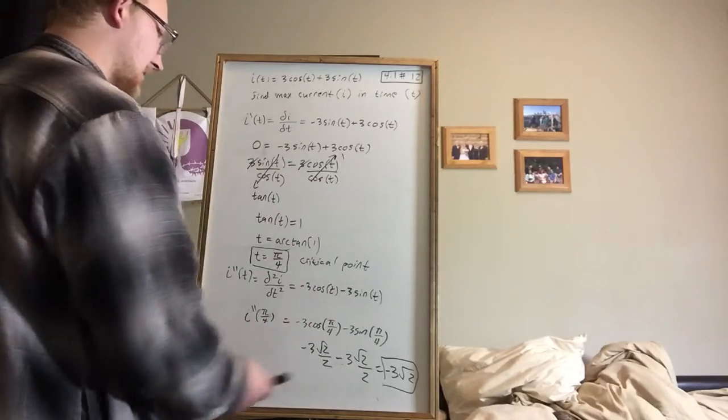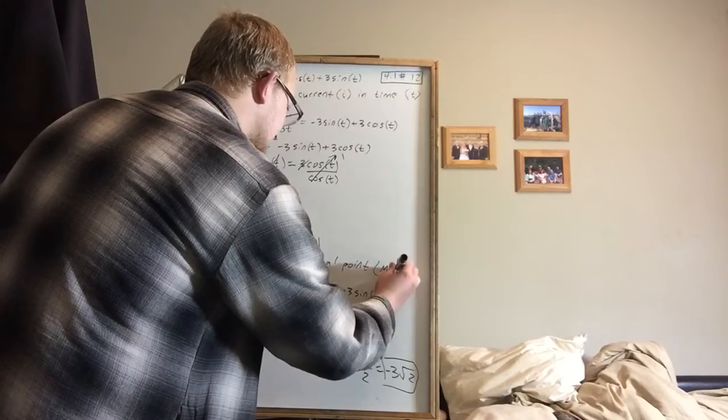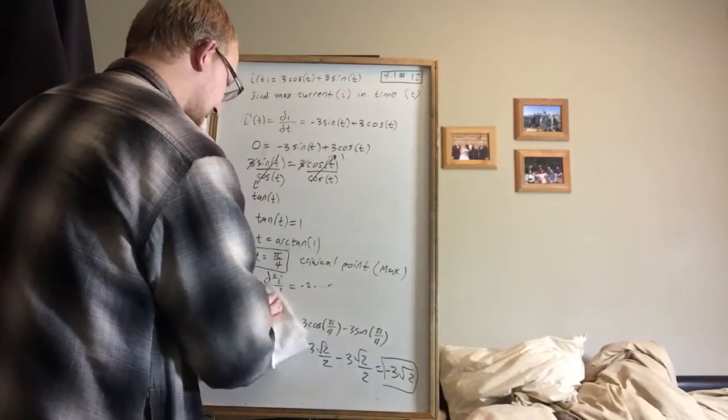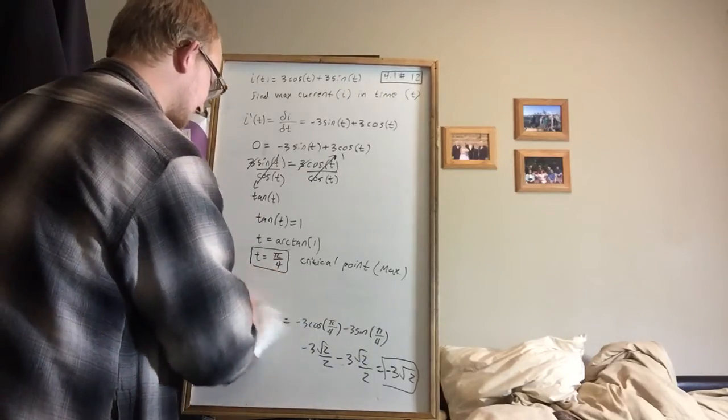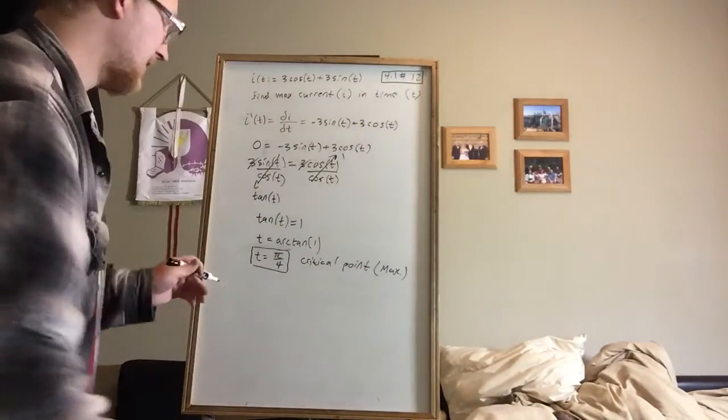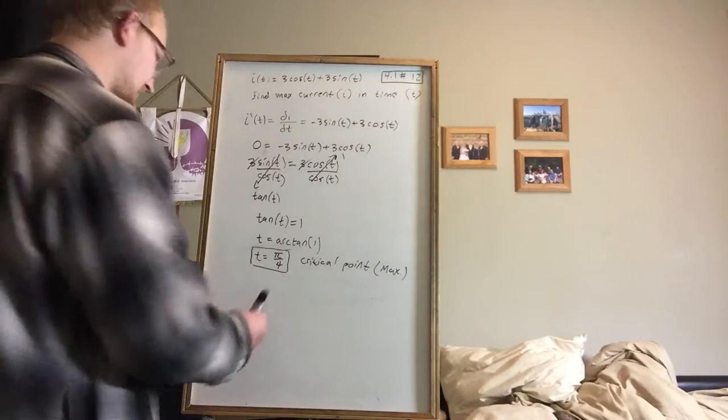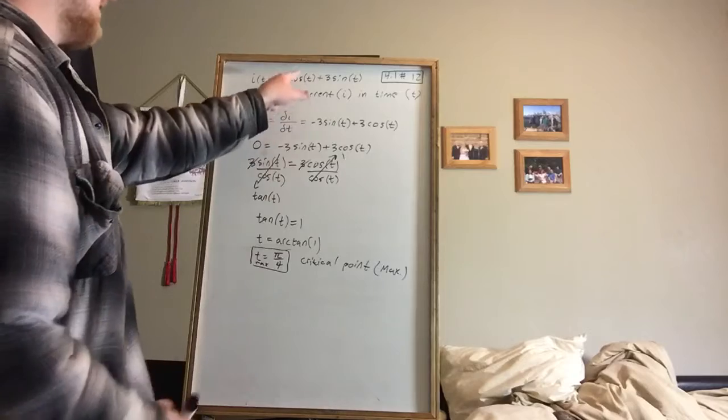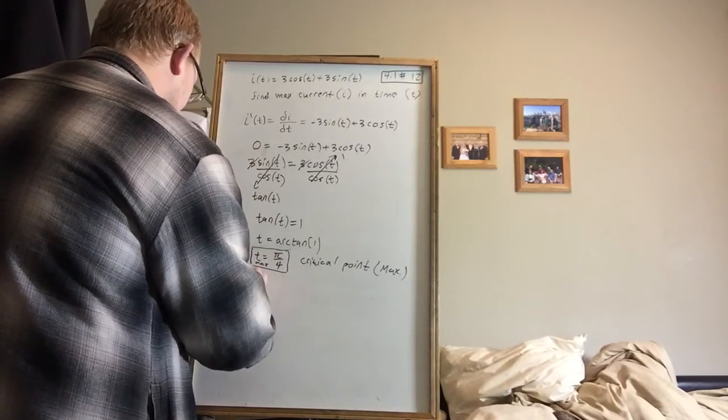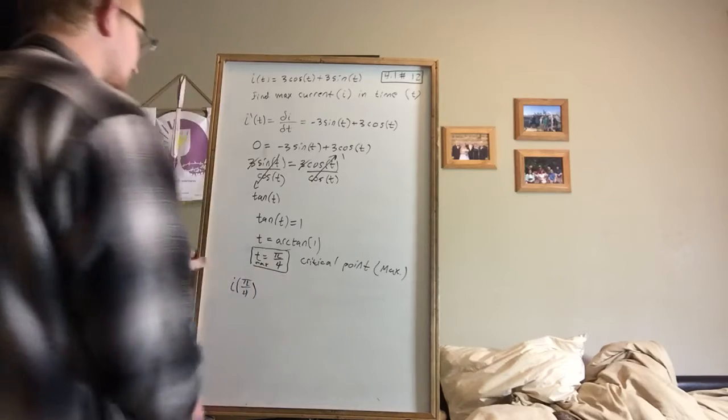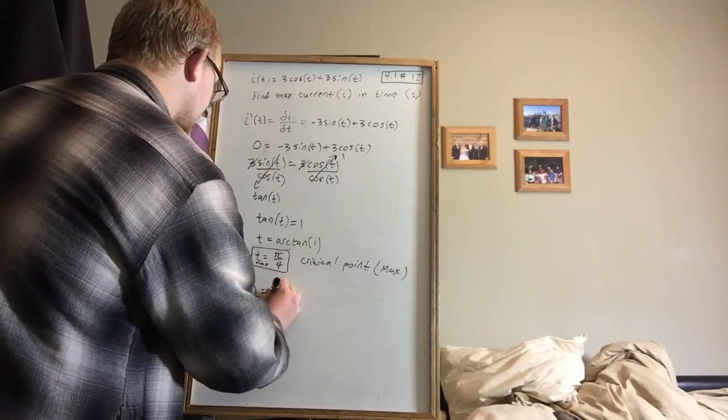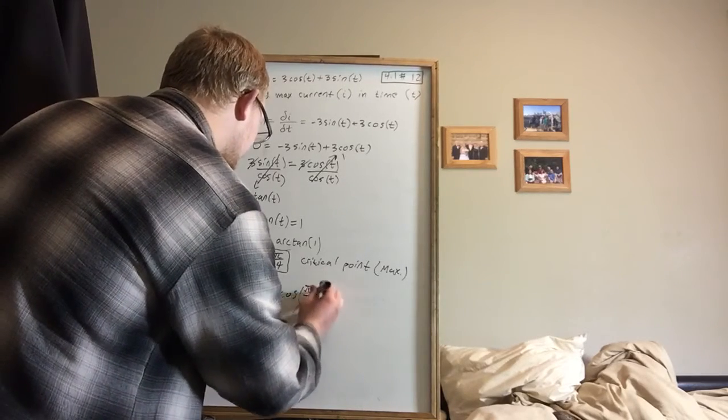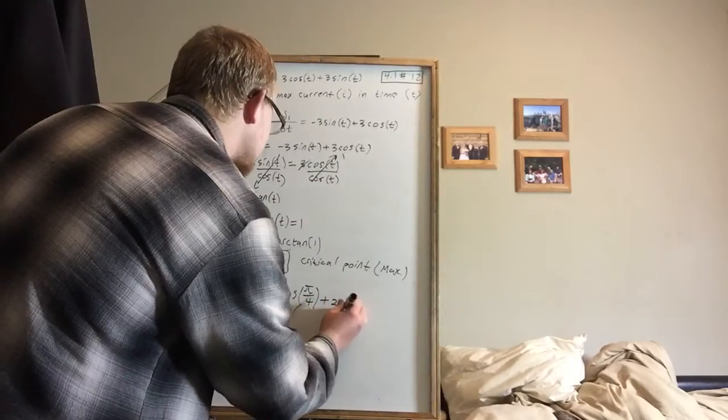And so we've now determined that this is, in fact, the max point by using the second derivative. And so now at this point, to answer the final question, what is the maximum value that the current can have? Well, now that we know that the maximum occurs at t equals pi fourths, so this is t max, time at the maximum current is pi fourths. We can now plug it back into our original equation. So now we're looking at i of pi fourths, or i of t max.